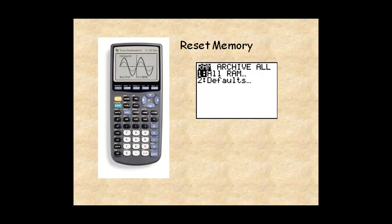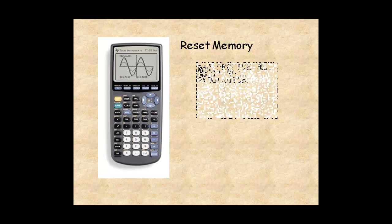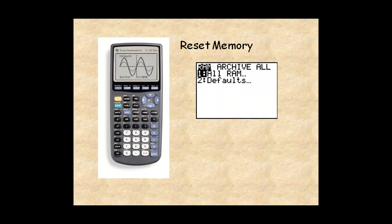It has three submenus. The first is the RAM submenu. You can use the right arrow key to display the Archive submenu and the All submenu. Do not use either of these menu items unless you understand exactly what they do.